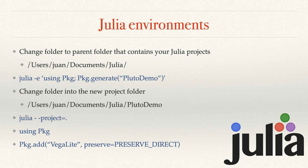Then we change into that directory. On any terminal, it's usually CD — you CD into the Pluto Demo folder. Then type Julia --project=. (full stop). That activates this environment, so you're no longer working in your base Julia installation; you're now working in this newly generated Julia environment.